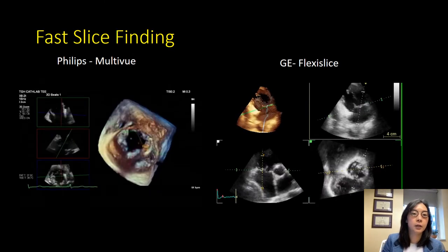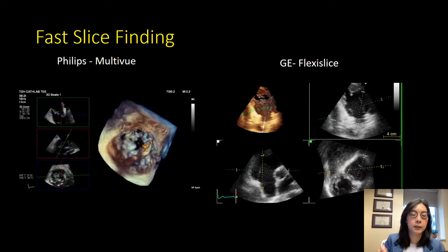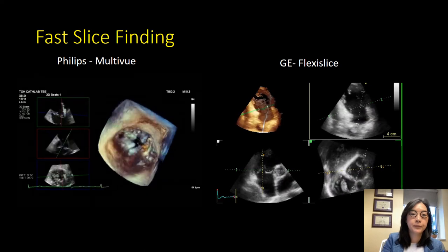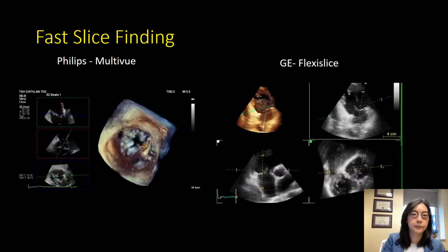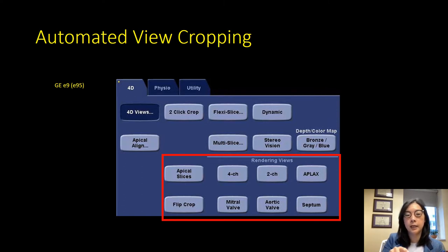There are newer tools available on machines that let you quickly click on the 3D data set and view your cross planes. Most vendors also have options for automated view cropping. You take a very large data set covering everything in the heart, do some initialization so the machine knows where the structures are located, and then you can hit a button like 'four-chamber view' and it'll crop automatically to that view, or crop to the mitral valve.